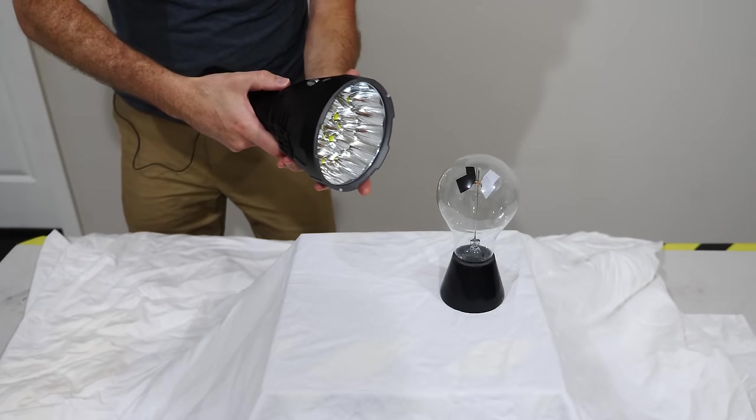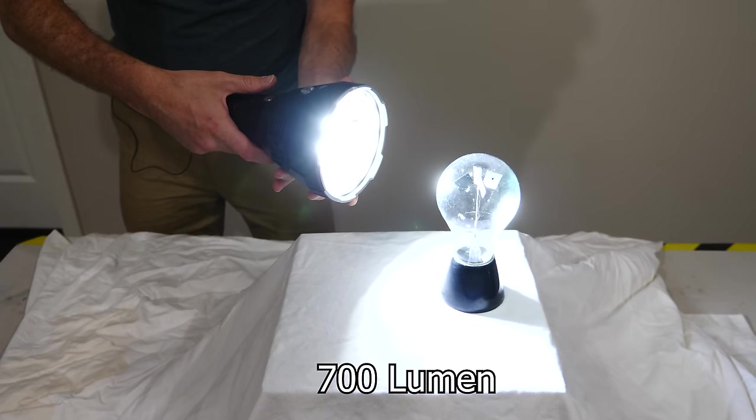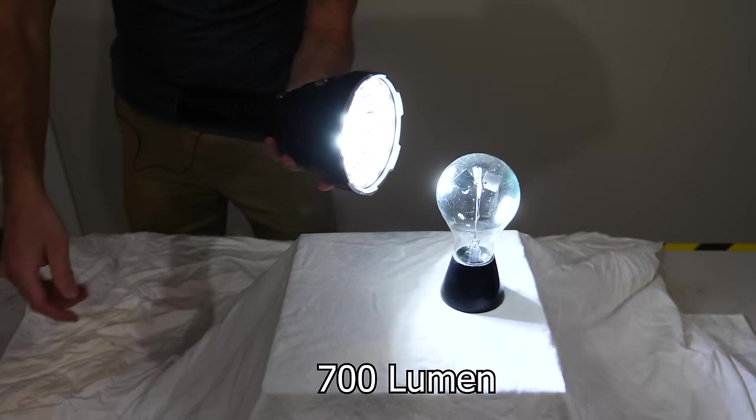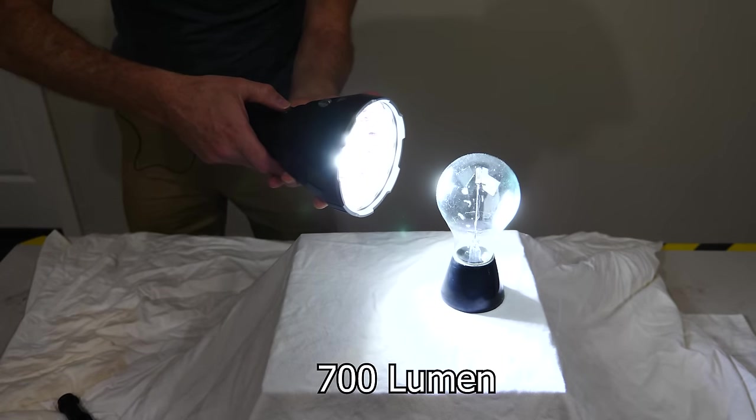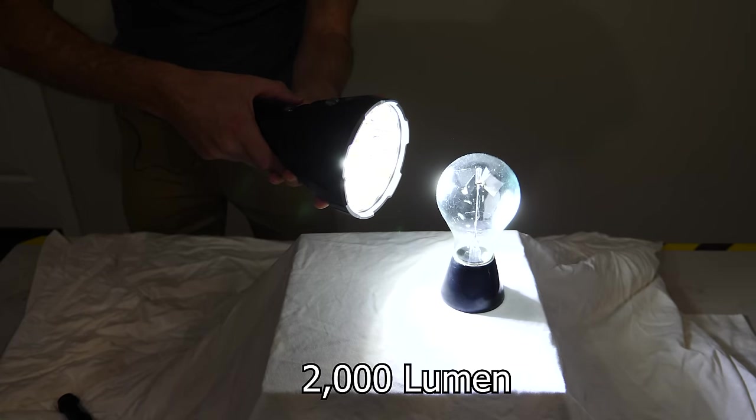Okay, we're going to start out at 700 lumens. All right, 700 lumens spins it appreciably fast, better than my small flashlight here. Turn it up. Okay, this is 2,000 lumens.